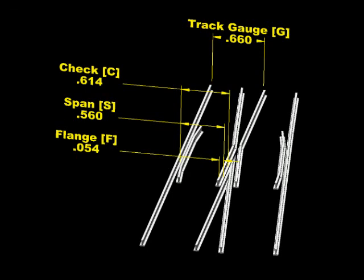So if we wanted to keep that span of 560 thou, we're going to have to compromise a bit on the check gauge. We're going to have to take that down to say 610 thou. By doing that, now our flange is keeping everything in check. Our check gauge is 610 thou, our span's 560 thou, flange is 50 thou, and all those numbers are in the NMRA specifications.